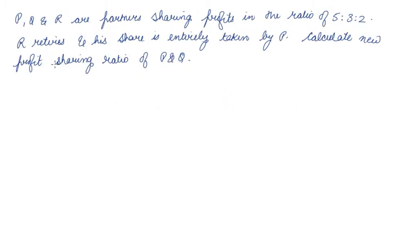P, Q, and R are partners sharing profits in the ratio of 5:3:2. R retires and his share is entirely taken up by P. Calculate new profit sharing ratio. R's share was 2/10, P's share was 5/10, and Q's share was 3/10. This share was entirely taken up by P, that is 2/10, so 7/10.